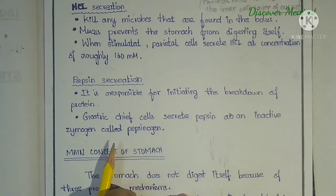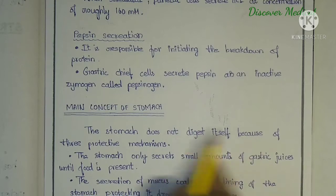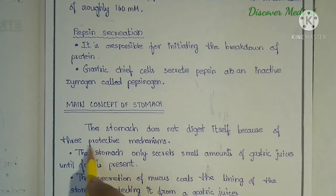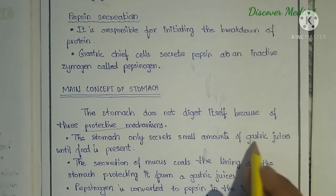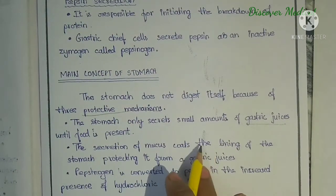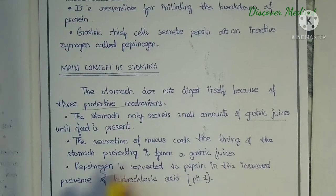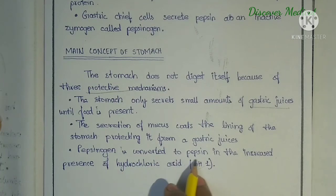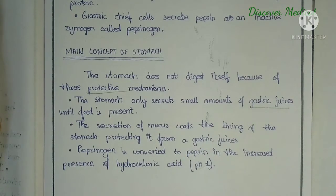Pepsin secretion is responsible for initiating the breakdown of protein. Gastric chief cells secrete pepsin as an inactive zymogen called pepsinogen. The stomach does not digest itself because of three protective mechanisms: it only secretes small amounts of gastric juices until food is present; secretion of mucus coats the lining of the stomach, protecting it from gastric juices; and pepsinogen is converted to pepsin in the presence of hydrochloric acid at a pH of 1.